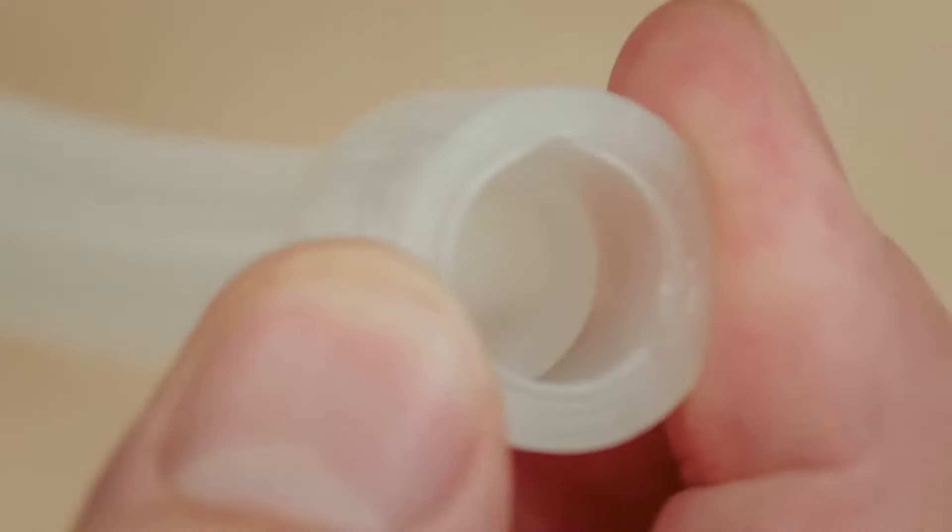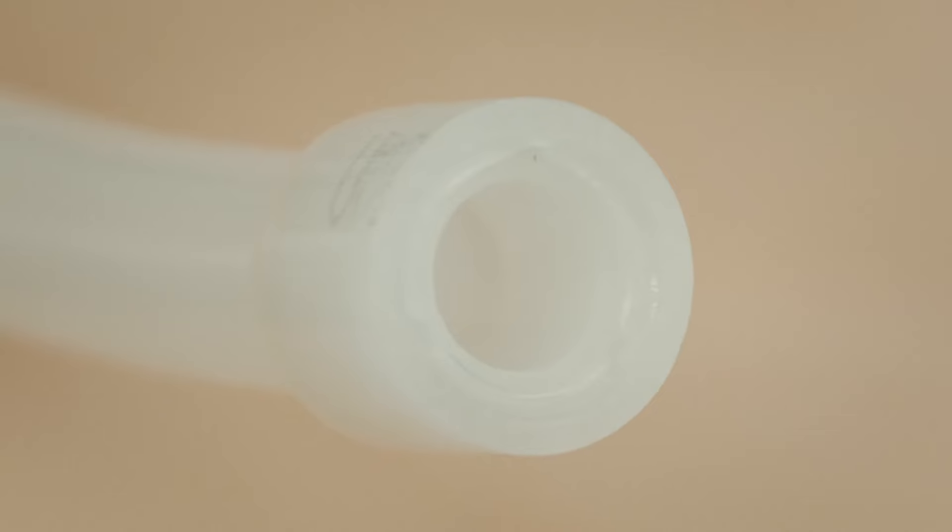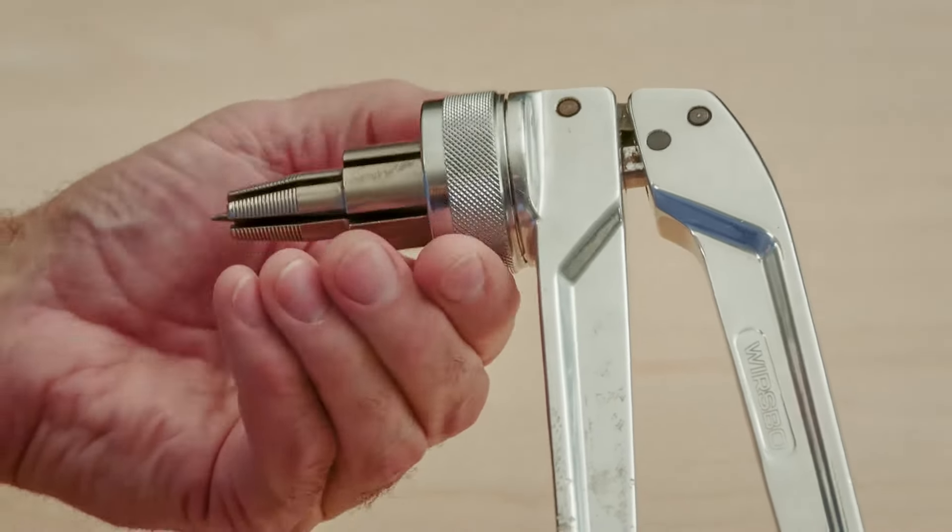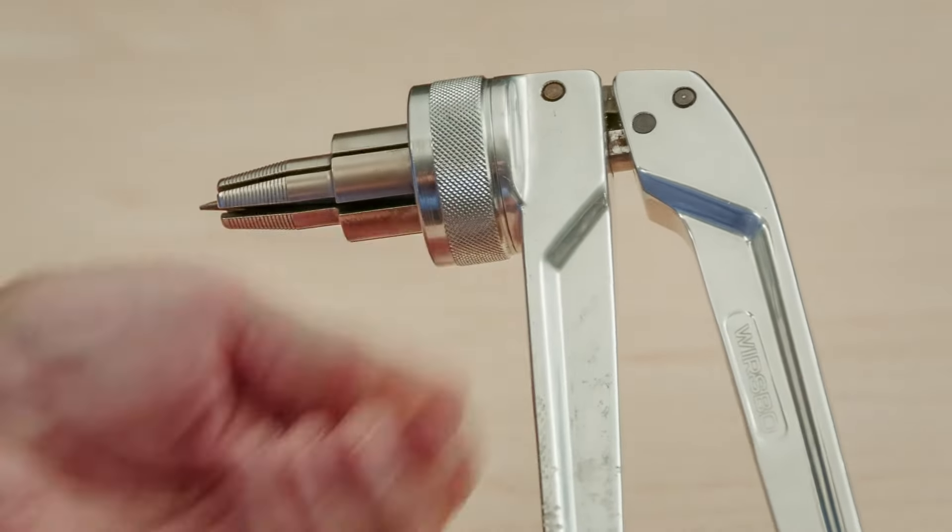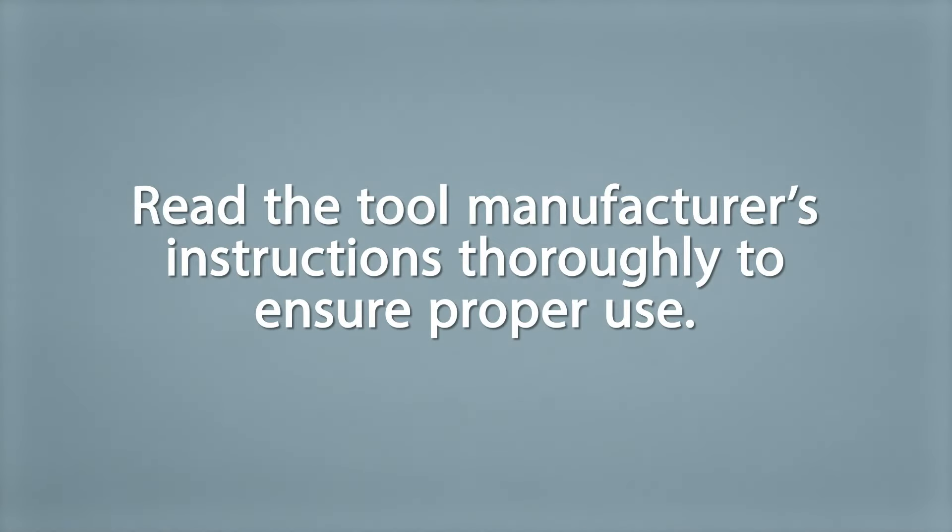Let's begin by sliding the PEX reinforcing ring onto the PEX tubing as far down as it goes. The built-in stop inside the ring will keep it from sliding down the tubing. Then set up your tool to the correct expansion setting that corresponds to the tubing size. Read the tool manufacturer's instructions thoroughly to ensure proper use.